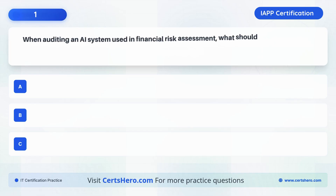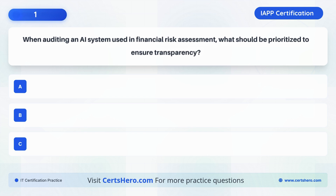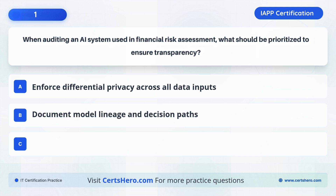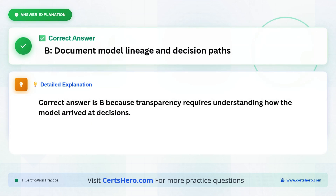When auditing an AI system used in financial risk assessment, what should be prioritized to ensure transparency? A. Enforce differential privacy across all data inputs. B. Document model lineage and decision paths. C. Retrain the model monthly to avoid bias. The correct answer is B: Document model lineage and decision paths, because transparency requires understanding how the model arrived at decisions.